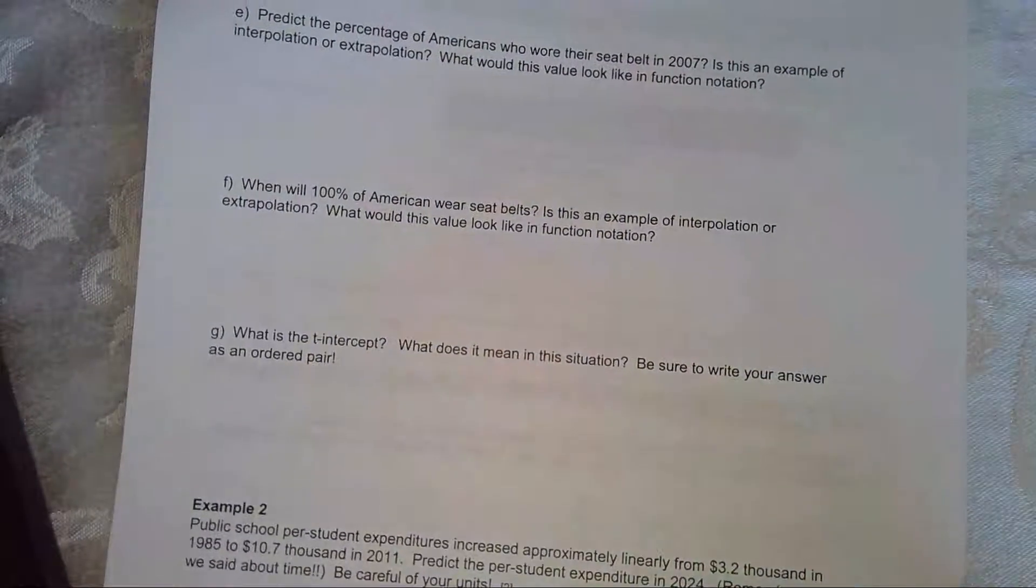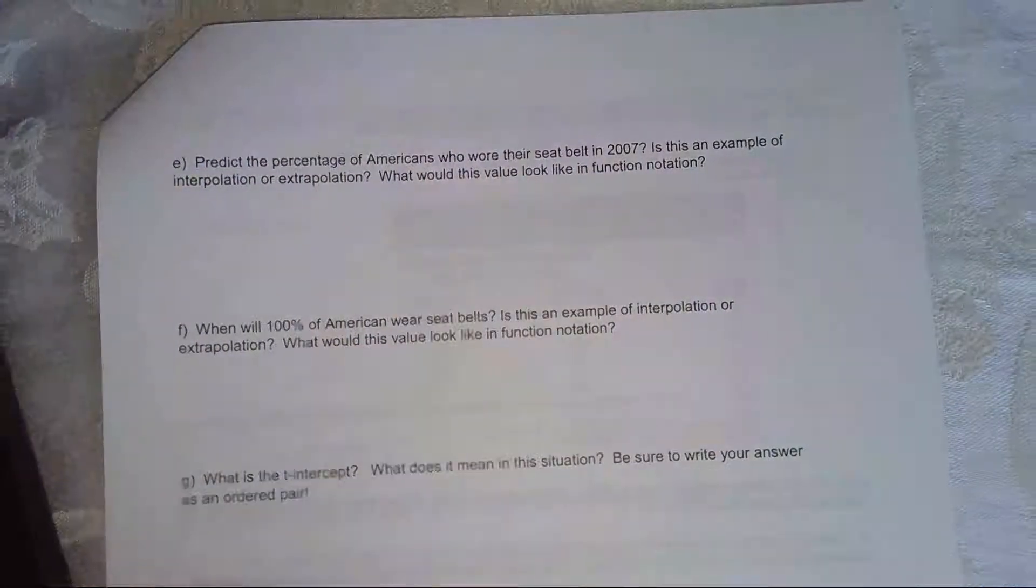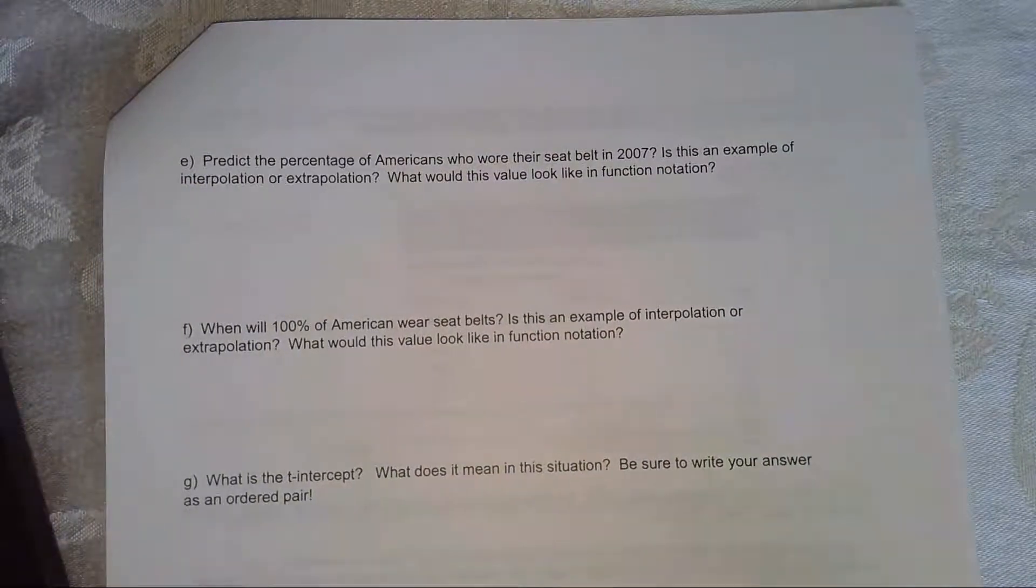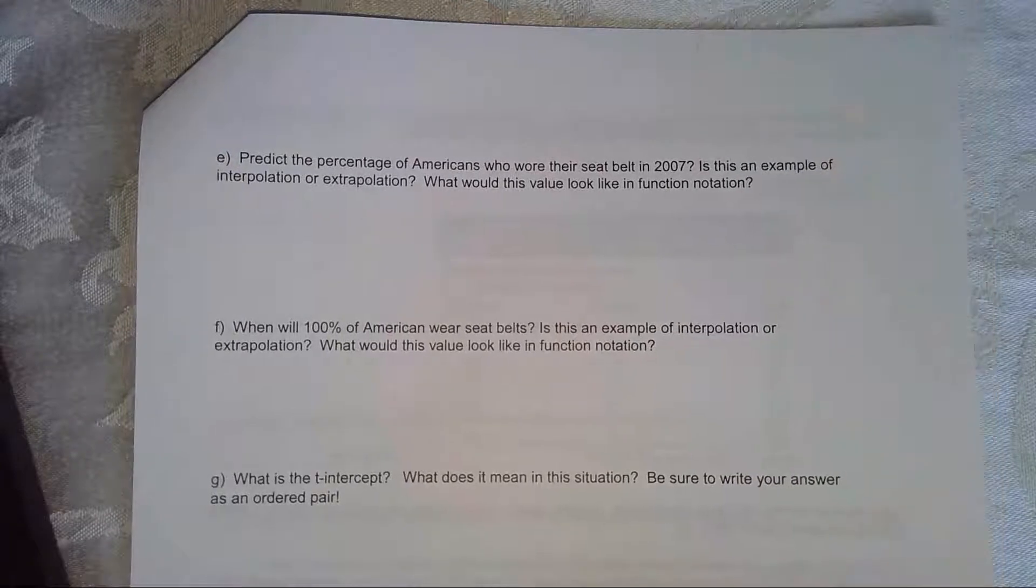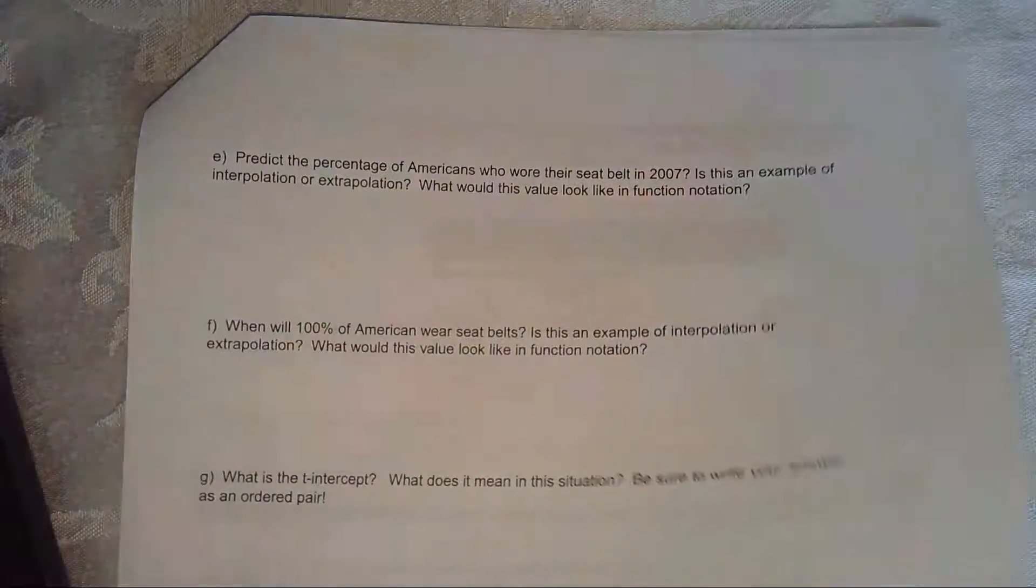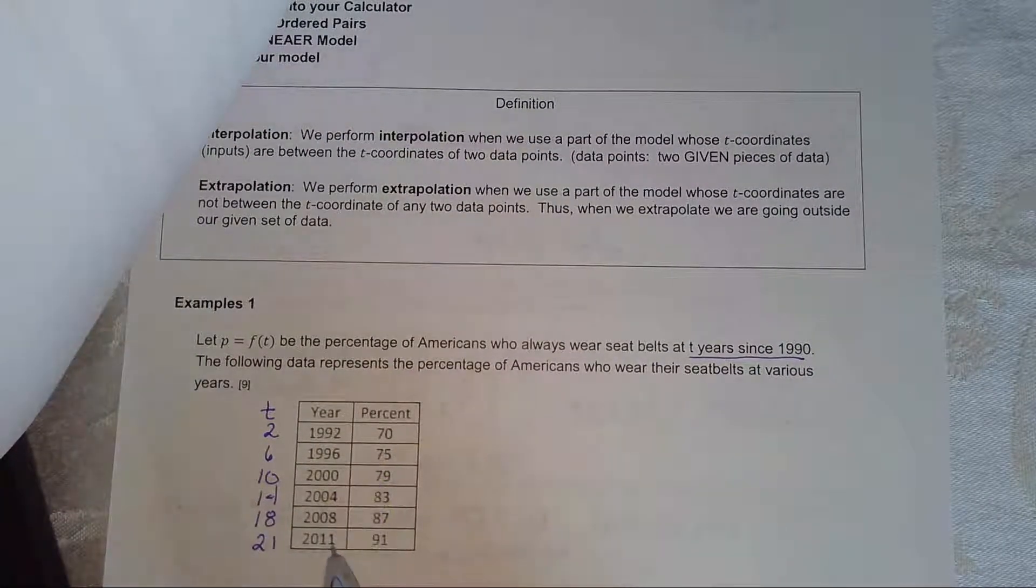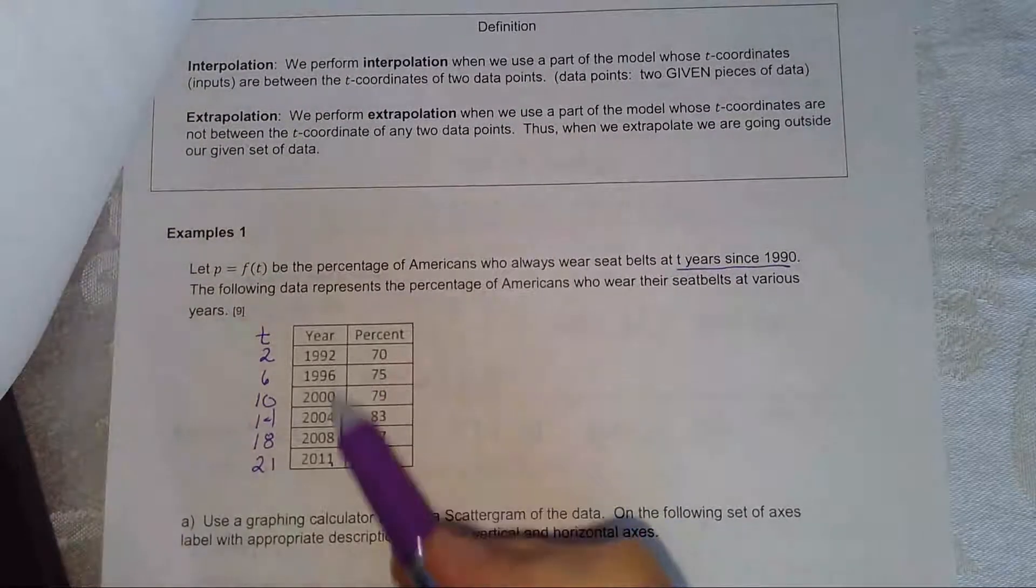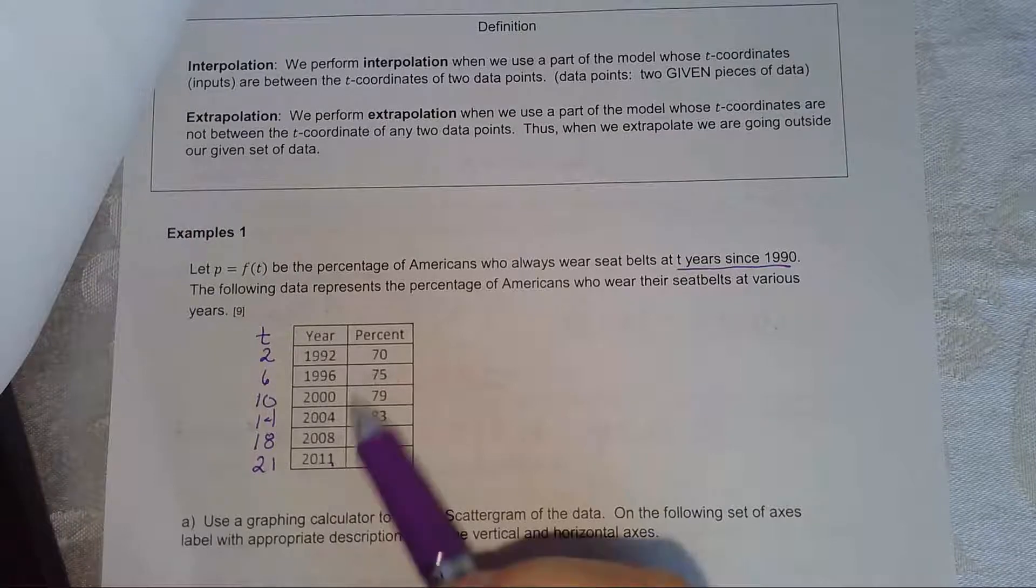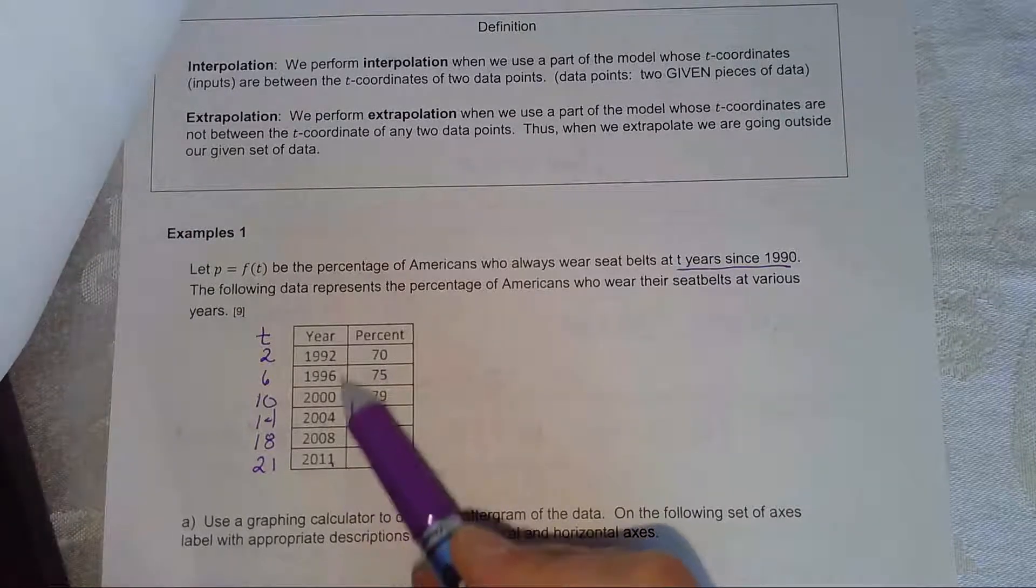Next question says, predict the percentage of Americans who wore seat belts in 2007. So let's talk about interpolation and extrapolation. Interpolation means you stay within the bounds of your given set of data. So interpolation means I stay between 1992 and 2011.